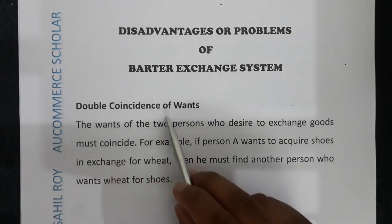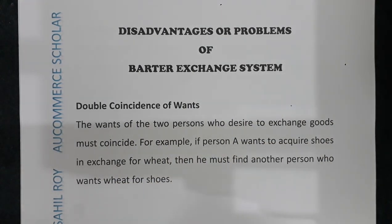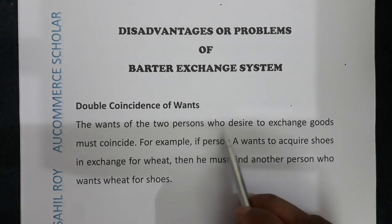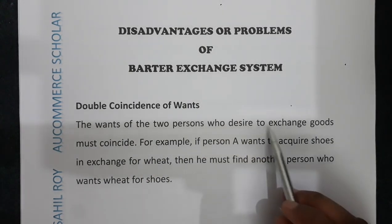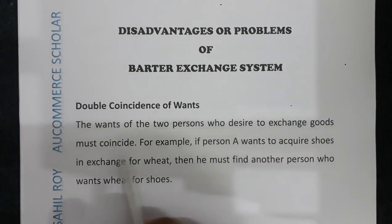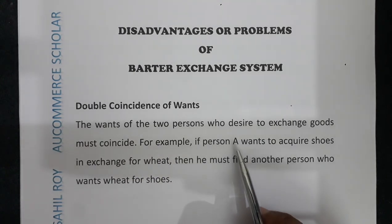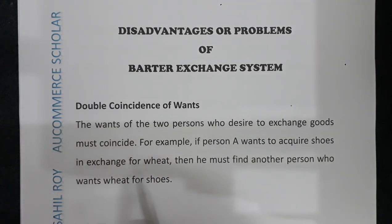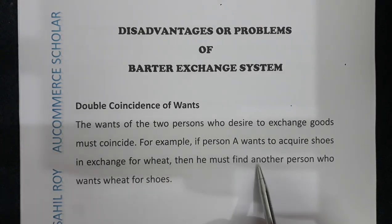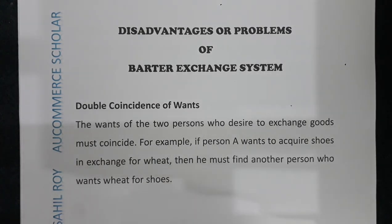The first problem is the double coincidence of wants. This means the wants of two persons who desire to exchange goods must coincide. For example, if person A wants to acquire shoes in exchange for wheat, then he must find another person who wants wheat for shoes.